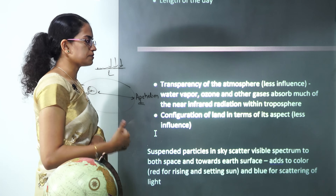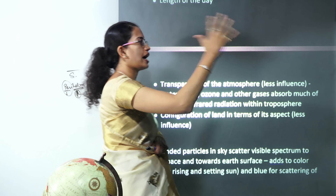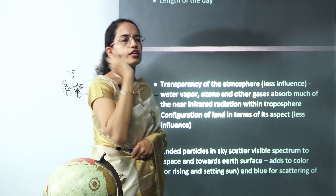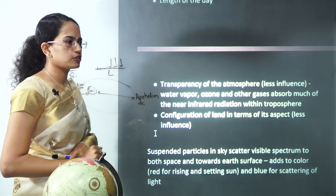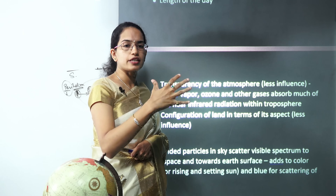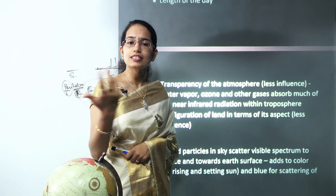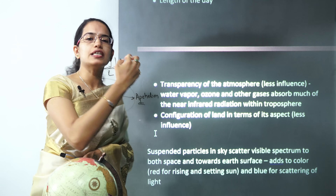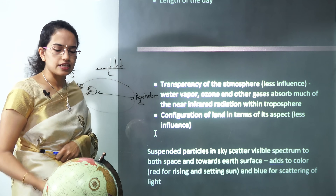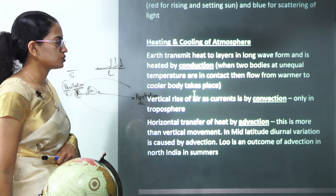In the sky you can see some kind of suspended particles. These suspended particles lead to scattering, and because of scattering we see the sky as blue in colour. We see the rising sun and the setting sun as red in colour.